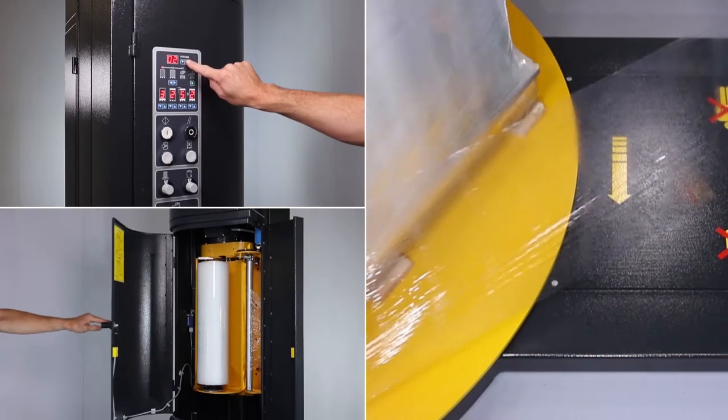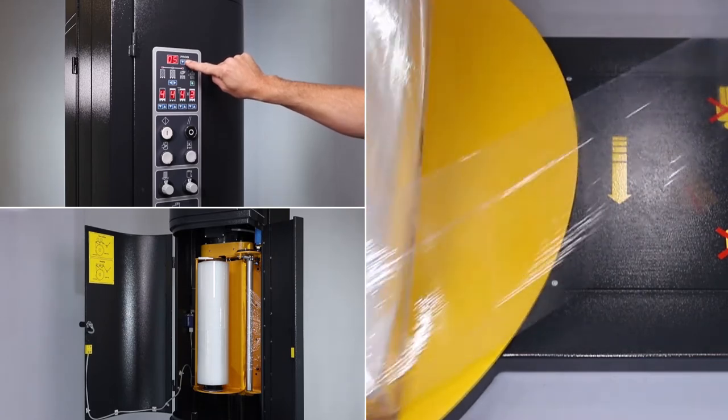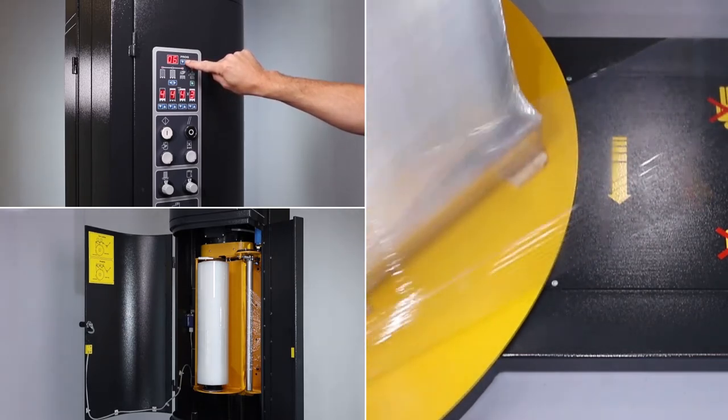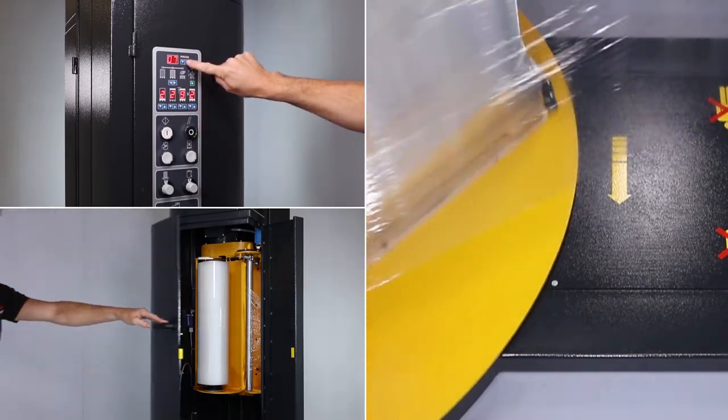Another safety feature is the enclosed tower. Moving parts are enclosed within the steel tower, keeping the operator completely safe. The film is dispensed from the head through a slot in the tower.